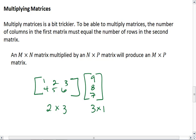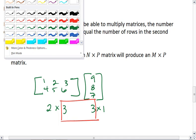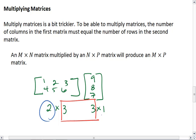So here, I want to make sure that these two numbers match up. The number of columns in the first matrix and the number of rows in the second matrix. If they do, then my resulting matrix will end up being a 2 by 1 matrix.